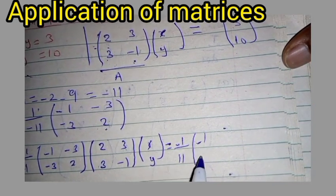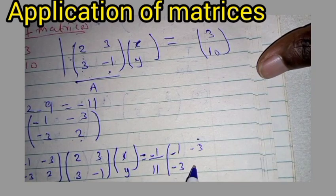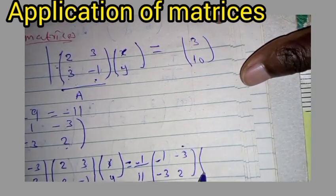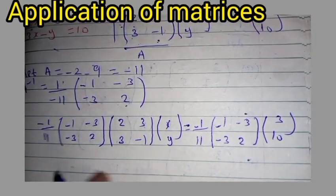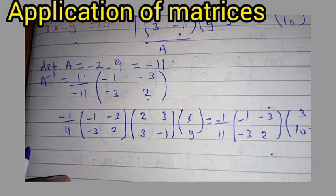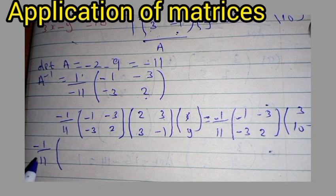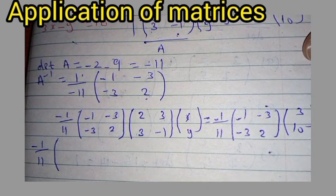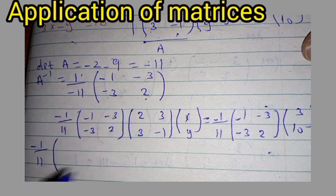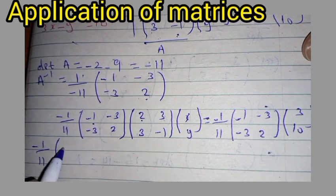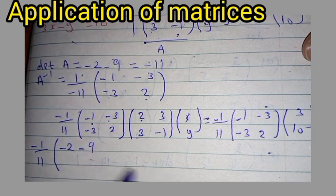This will be equal to, on the right-hand side, our inverse negative 1 over 11 times [-1, -3; -3, 2] multiplied by [3, 10]. It is advisable to leave the negative 1 over 11 outside the bracket to avoid making errors. Multiplying matrix by matrix: row times column. The first element is negative 1 times 2 plus negative 3 times 3, giving negative 2 minus 9.